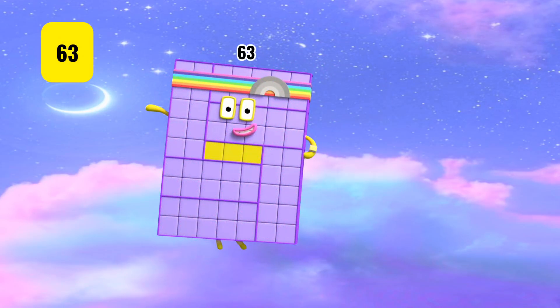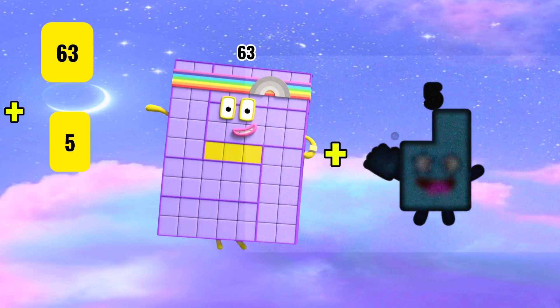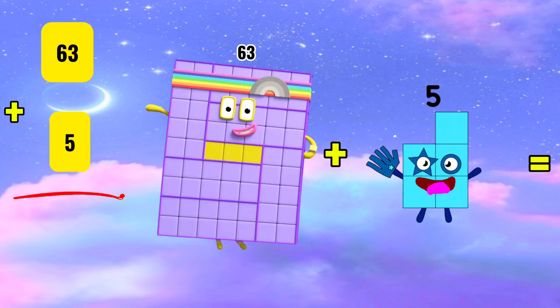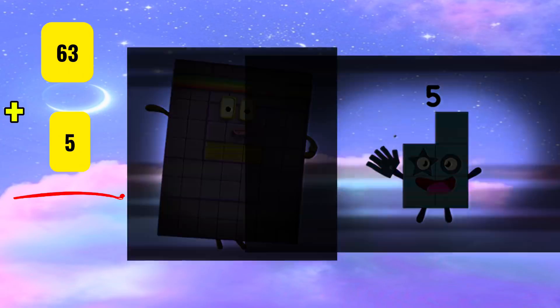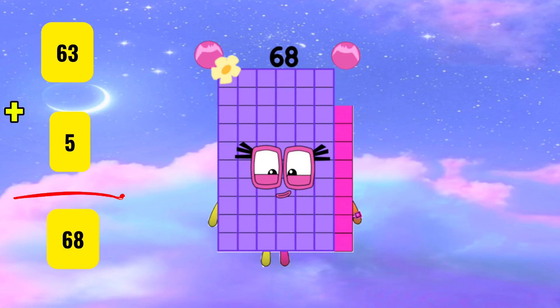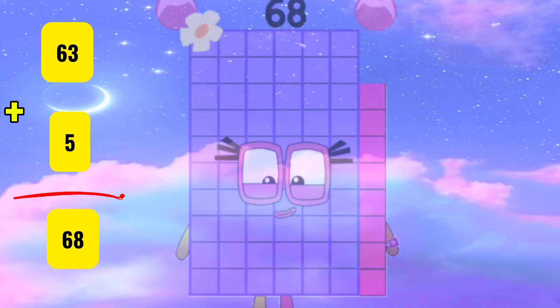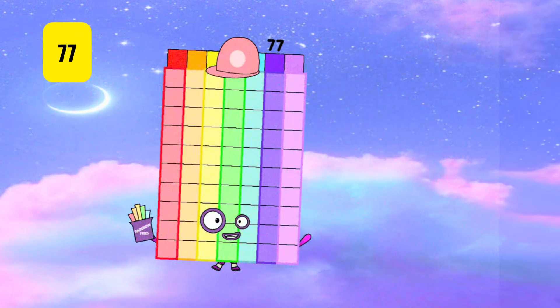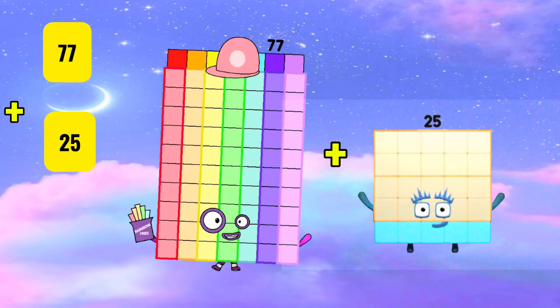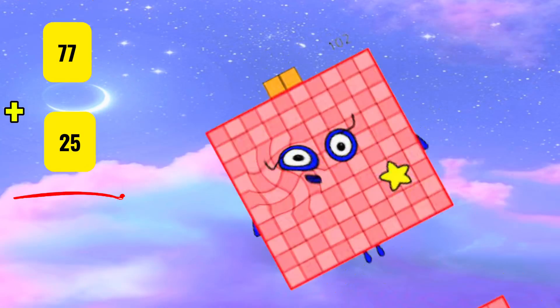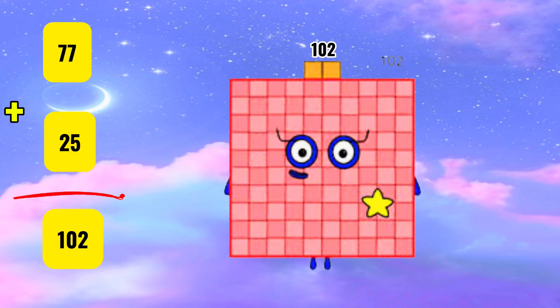63 plus 5 equals 68. 77 plus 25 equals 102.